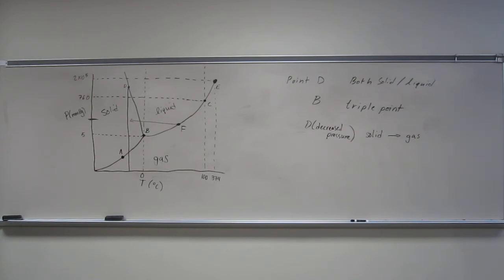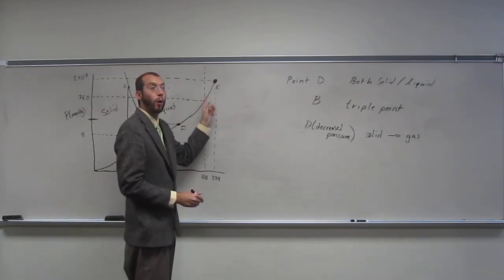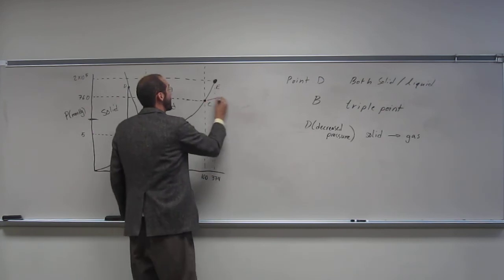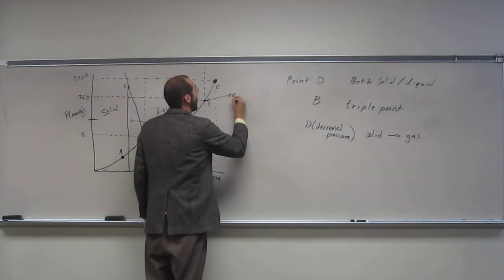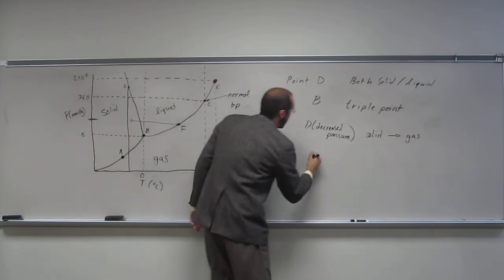There's something even more specific about it. It's at 760 millimeters of mercury, which is what? One ATM, right? Which is where you find the normal boiling point. So this is the normal boiling point. Point C.